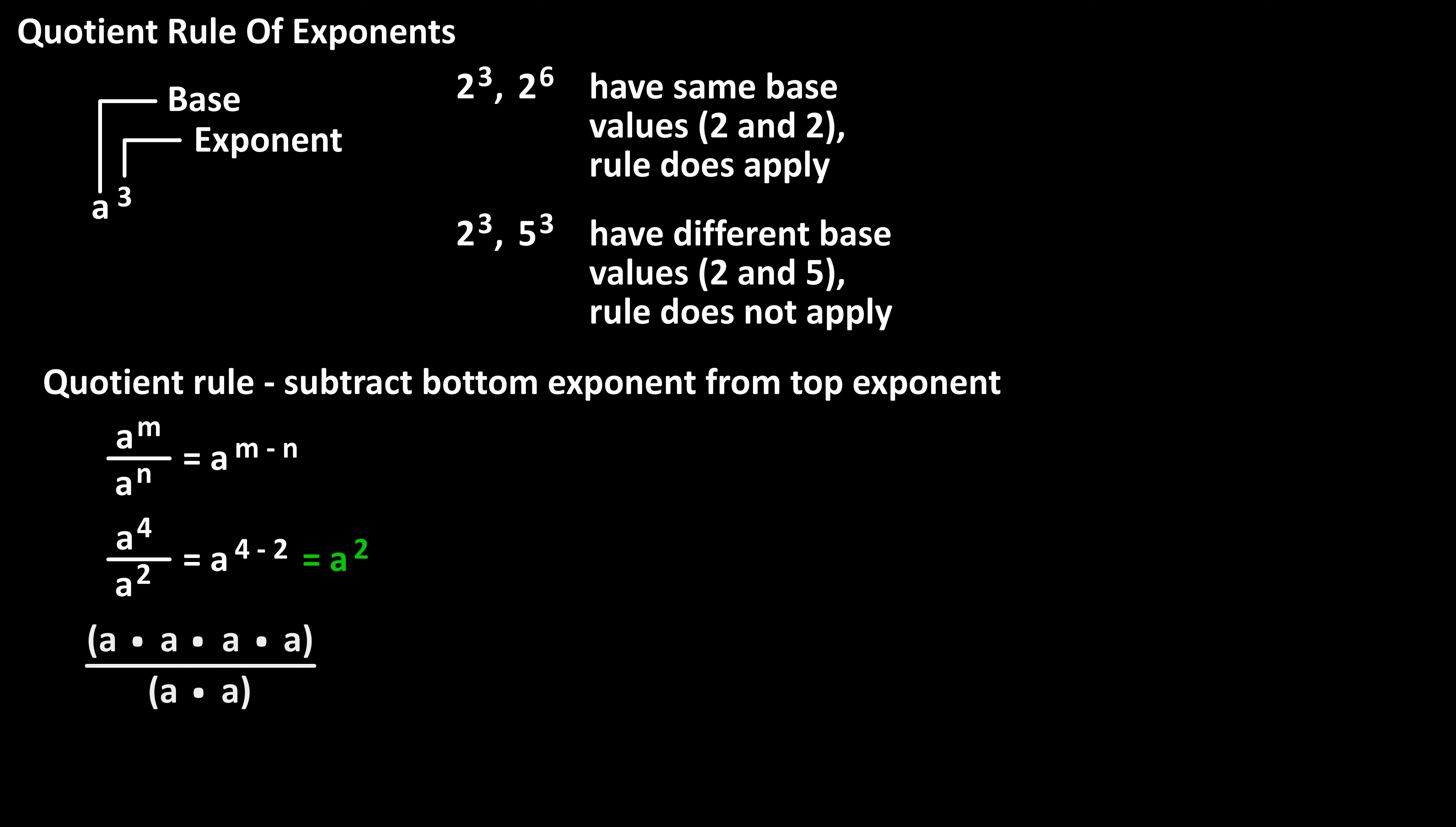we have a times a times a times a for a raised to the 4 on top, and a times a for a raised to the 2 on the bottom. We can cancel two of these out and we are left with a raised to the 2 as the answer, same as before.